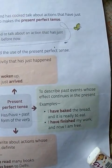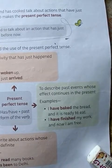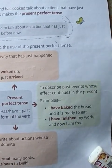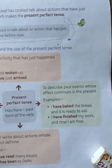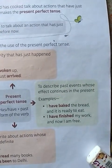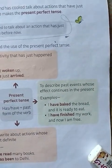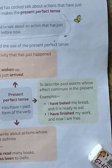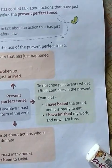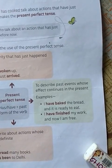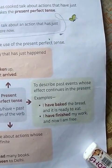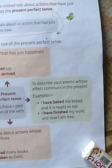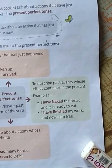To describe past events whose effects continue in the present: I have baked the bread and it is ready to eat. I have finished my work and now I am free. Aap dekho, yeh past events bata raha hai jinka effect present me bhi continue hota hai.